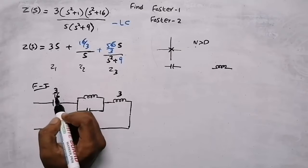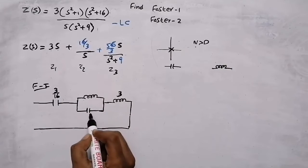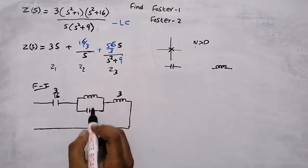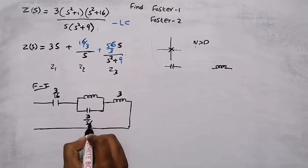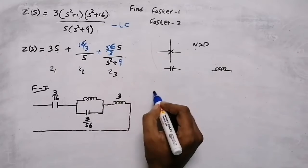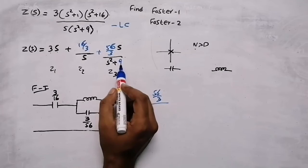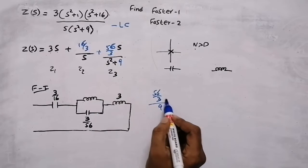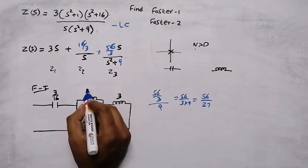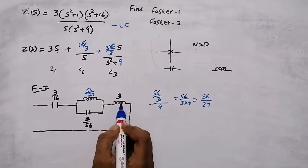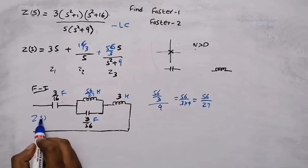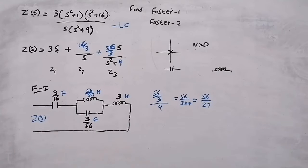If s is in the denominator it is a capacitor, and the capacitor value is the reciprocal. From 16/3 over s, the capacitor value is 3/16 Farad. For the parallel LC combination from (56/3)s over (s squared plus 9): the capacitor value is the reciprocal of 56/3, which is 3/56 Farad, and the inductor value is 56/3 divided by 9, which equals 56/27 Henry.